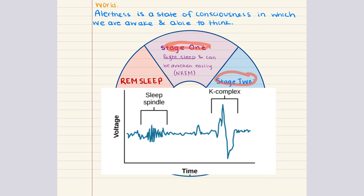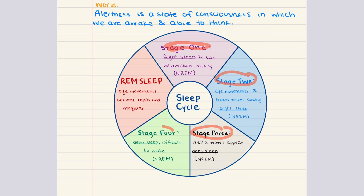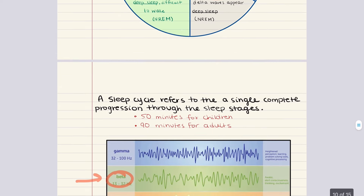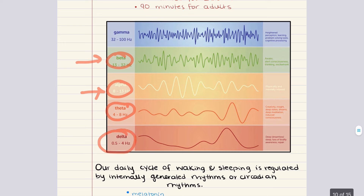Falling even more deeply asleep, you enter stages three and four — also known as slow-wave sleep stages. EEG activity grows progressively slower until only a few sleep waves per second are seen. These low-frequency, high-voltage sleep waves are called delta waves. During stages three and four, it becomes especially difficult to wake someone up. Slow-wave sleep has been associated with cognitive recovery, memory consolidation, and increased growth hormone release.